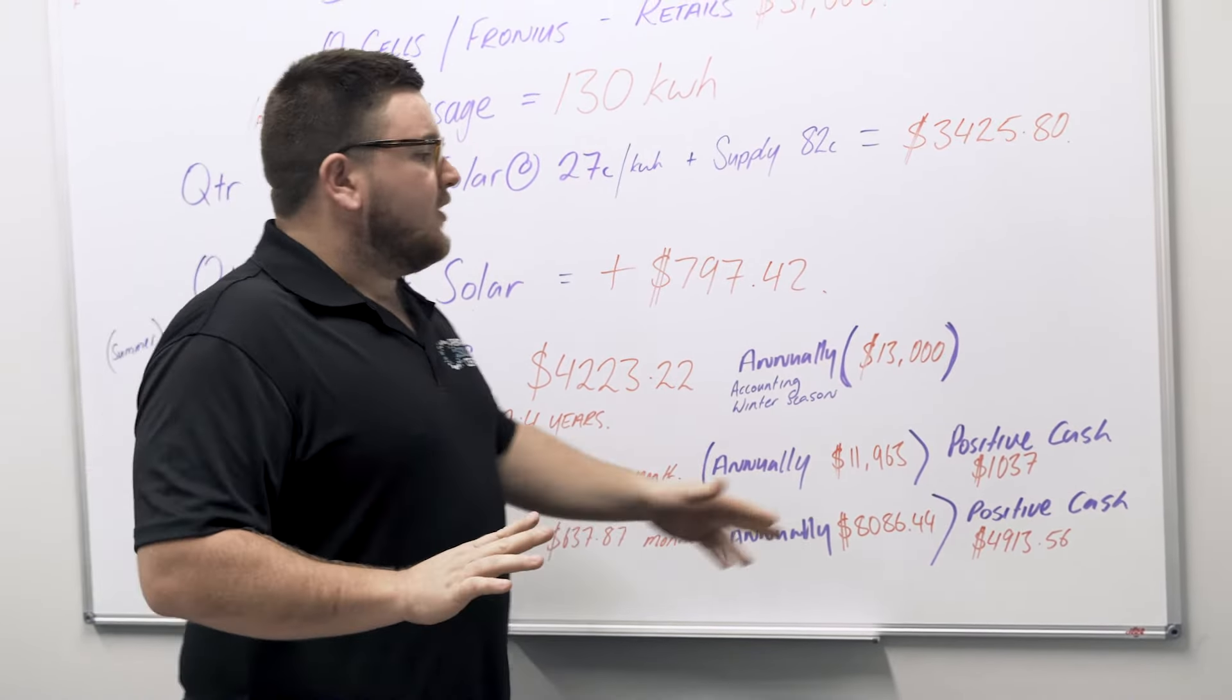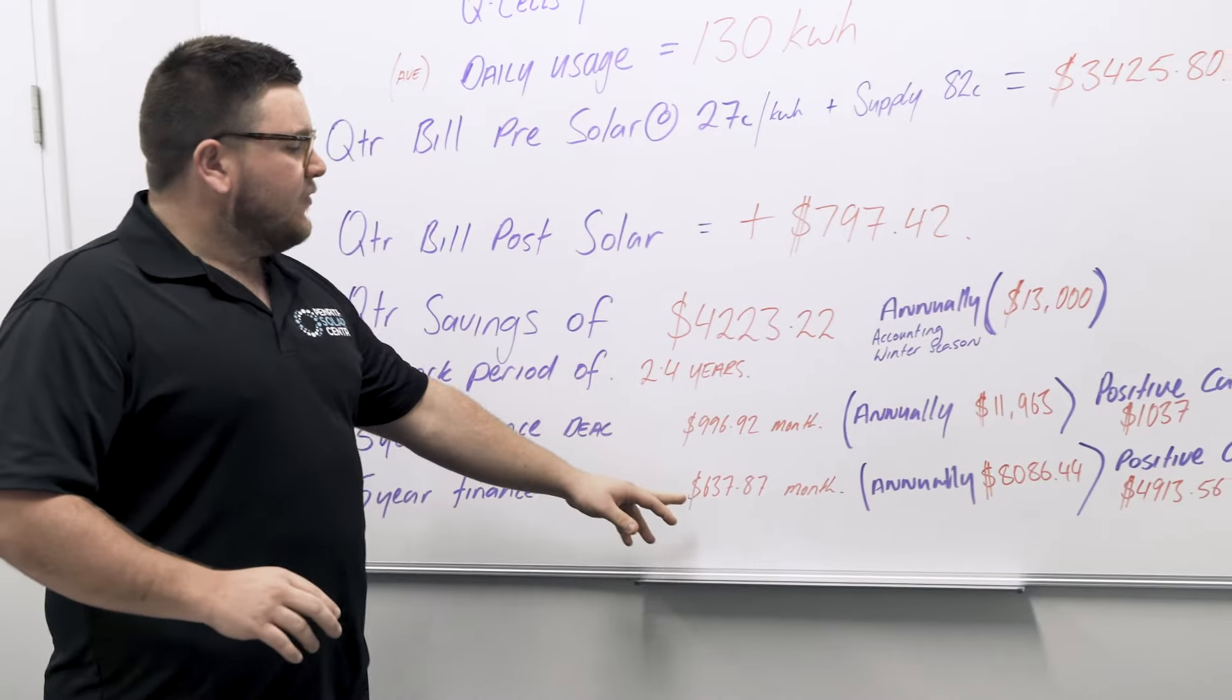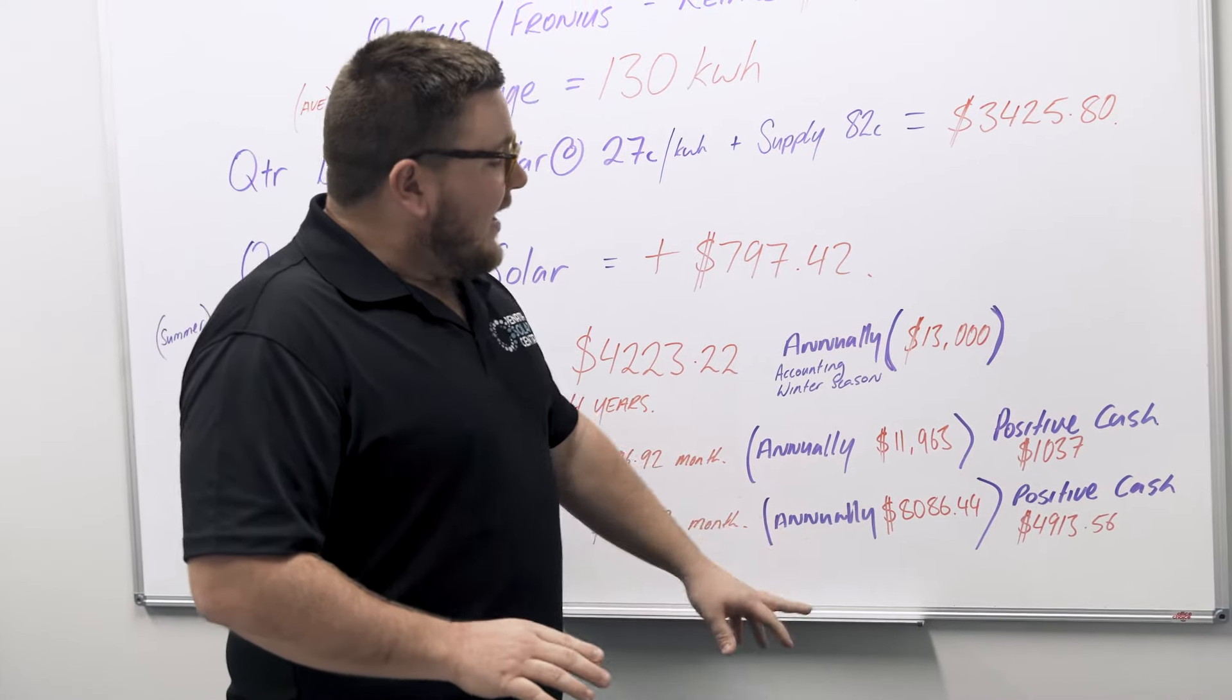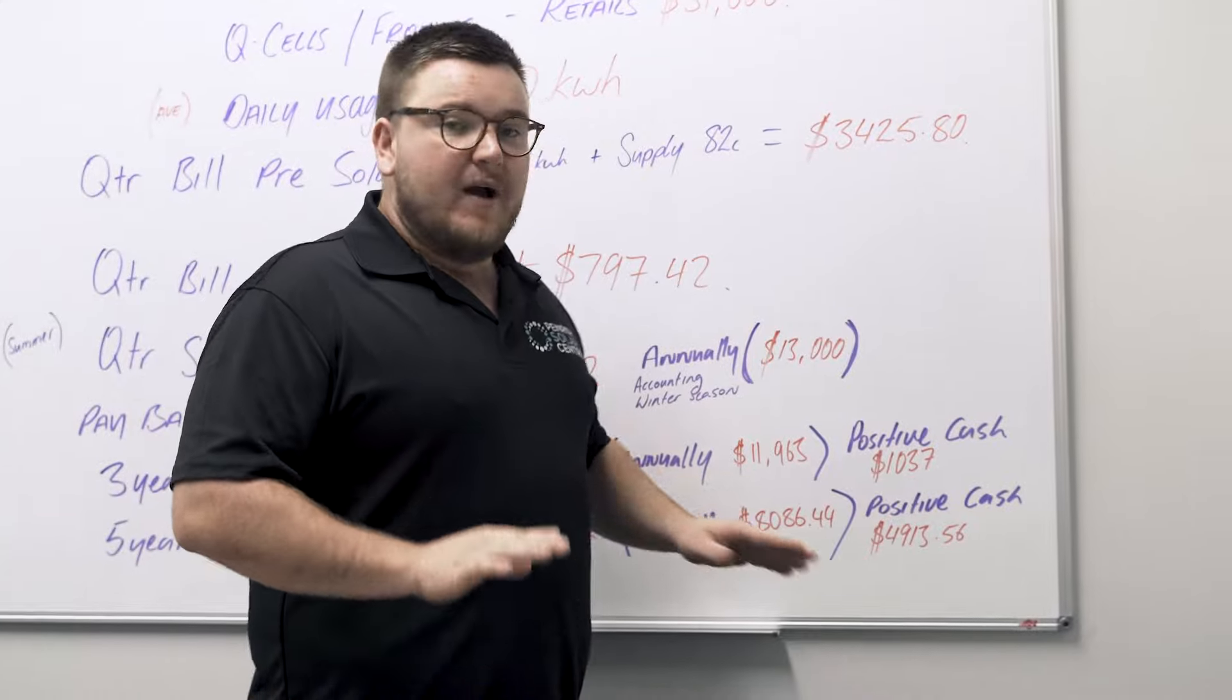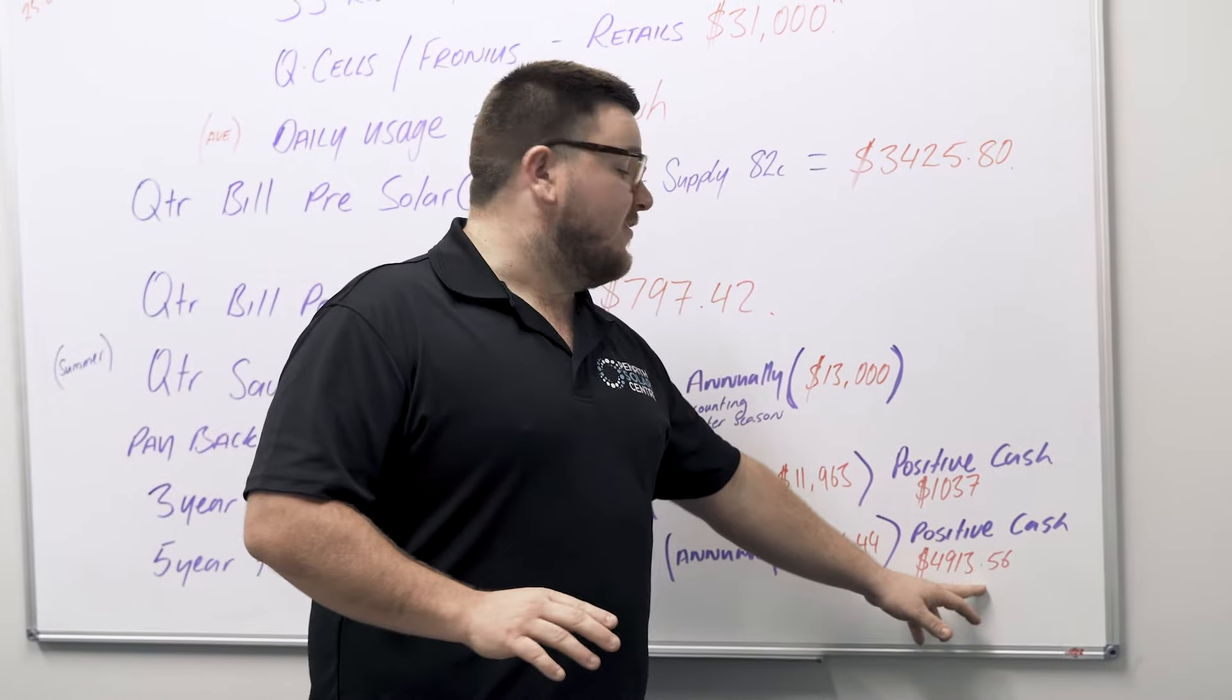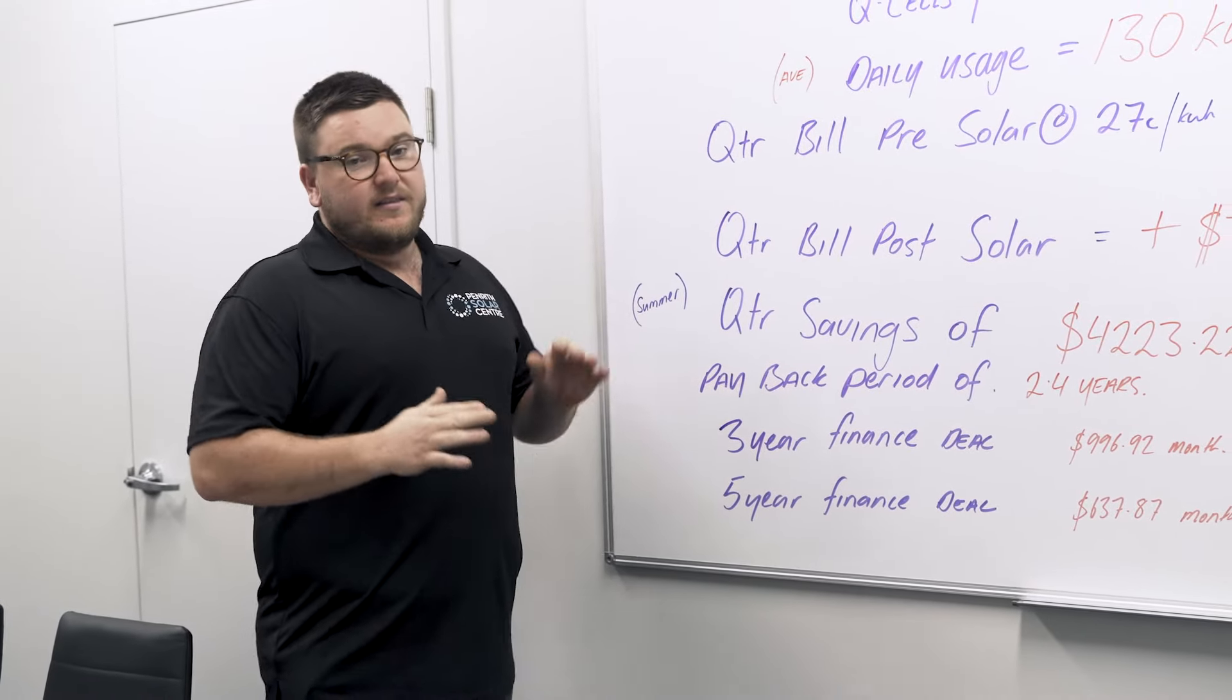If you did it over a five-year finance deal, it would cost you $637.87 roughly per month. Annually that's $8,086.44. You're straight away without putting any money down in a cash flow positive position of $4,913.56. That is huge savings straight off the bat. Now again guys, this isn't numbers that we pulled out of the air. This is fact. This is our power bill.